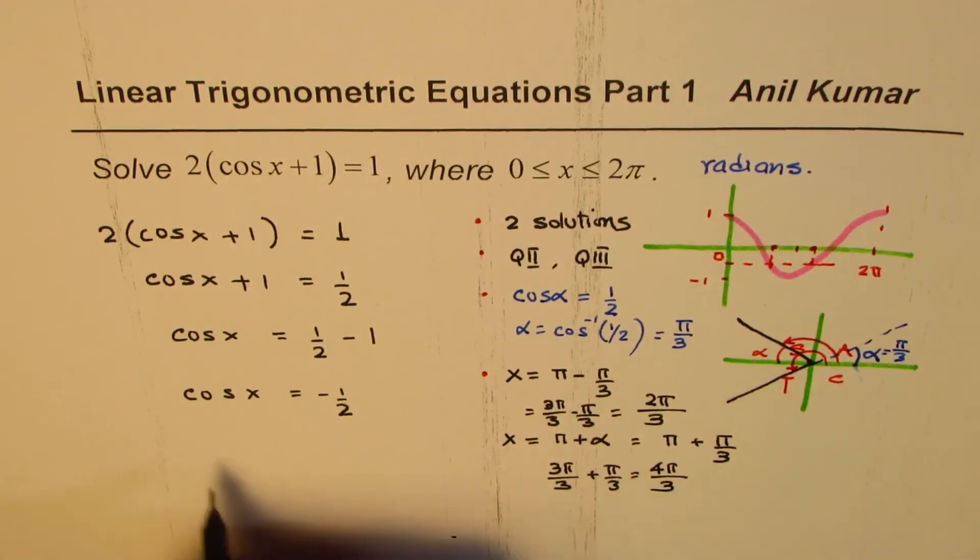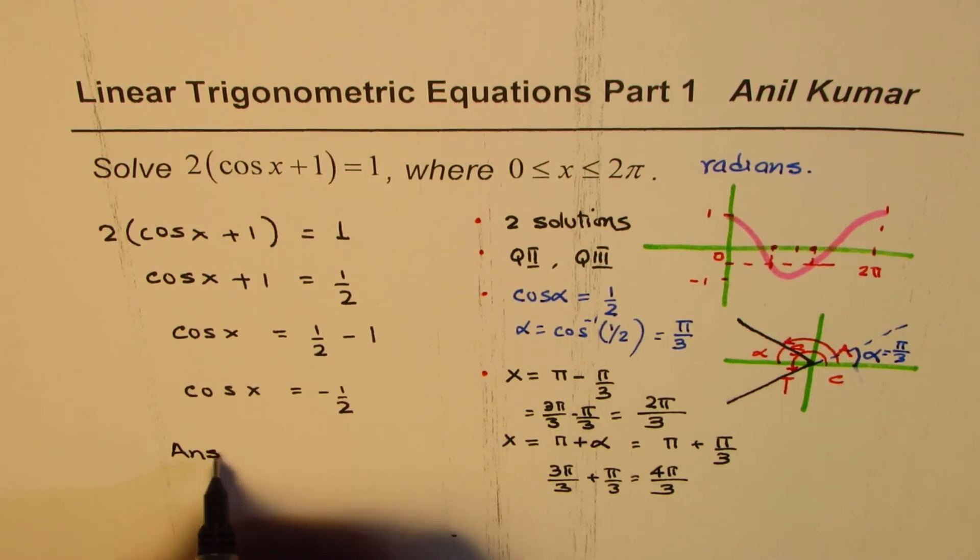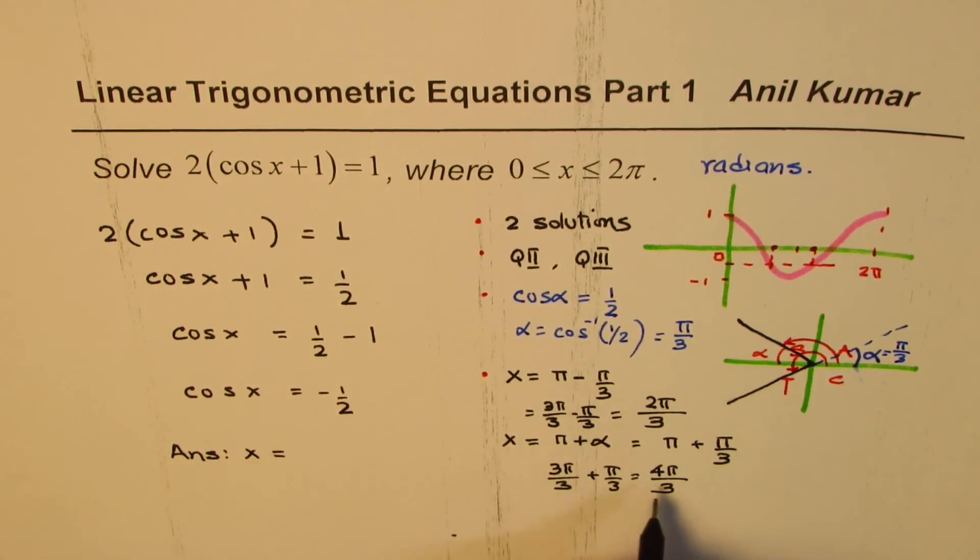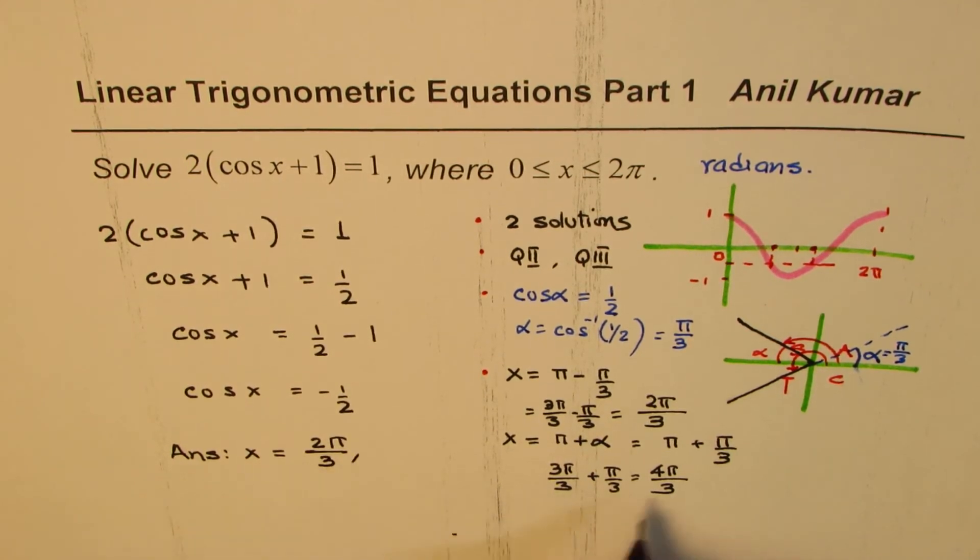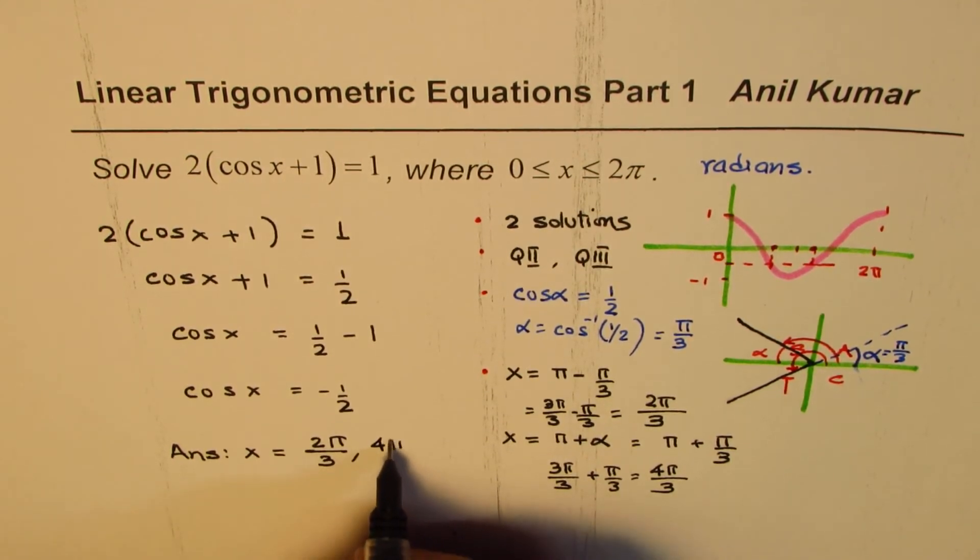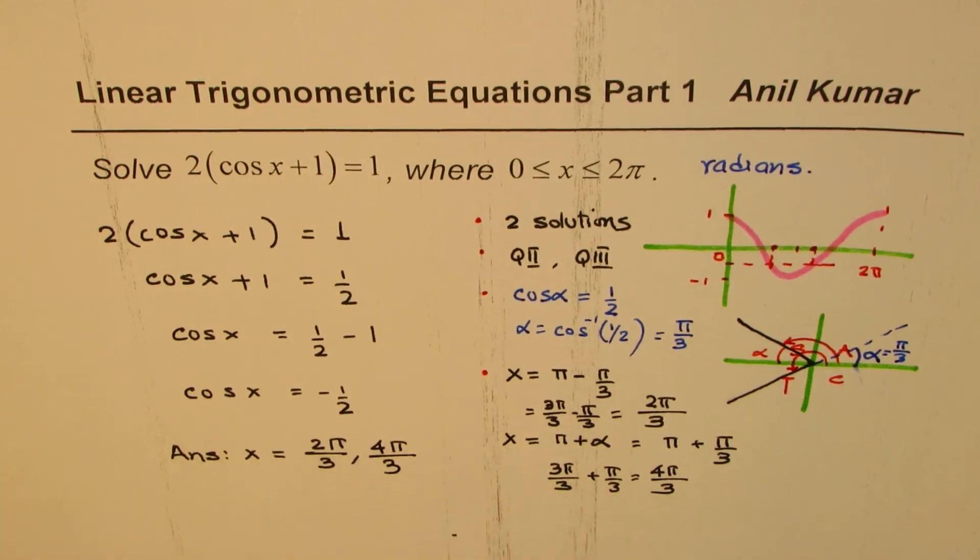And here we get 3π/3, taking common denominator, plus π/3 gives us 4π/3. So we get our solutions and the answer therefore is x = 2π/3 and 4π/3.